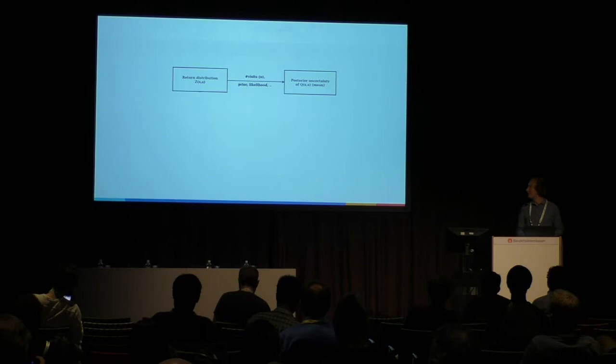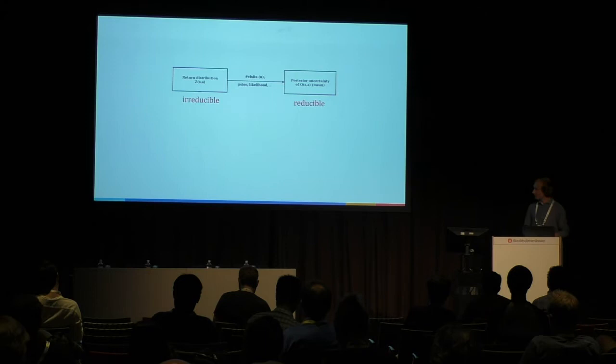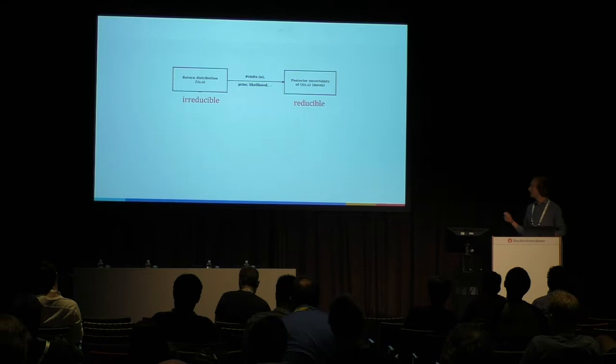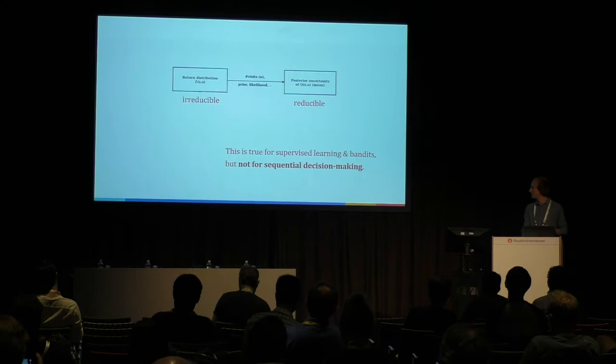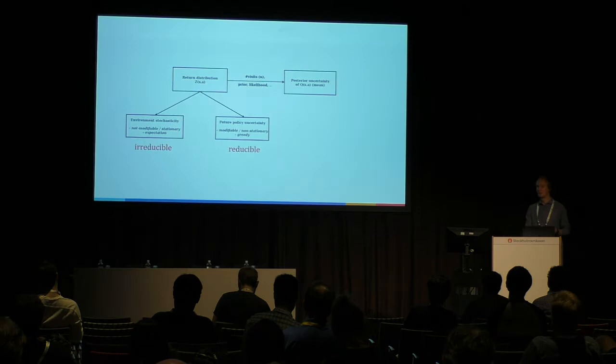Hi, I'm Thomas, and I'll talk about the potential of the return distribution for exploration. We have two classic distributions: the return distribution from which we're sampling, and in the frequentist or Bayesian approach, a posterior distribution over the mean. People generally say we shouldn't care about the return distribution because that's the irreducible part of uncertainty, and we should only care about the posterior of the mean. Well, this is true for supervised learning and bandits, but it's actually not true for the sequential decision-making setting.